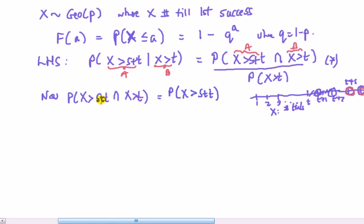Let's just say T is 2, S is 3, so X is bigger than 5, and X is bigger than 2. Well, if X is bigger than 5, and it's bigger than 2, it's got to be bigger than 5. So that's all I'm saying.